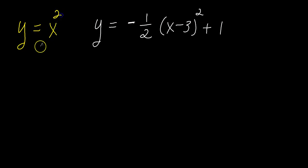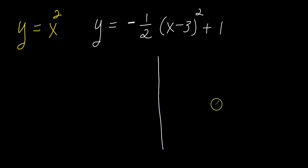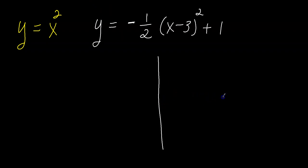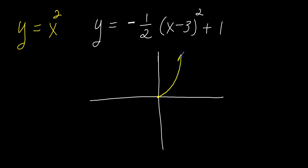I'm going to make a sketch of the parent function. Hopefully you remember that y equals x squared looks like the letter U from previous videos. So I'll make my x-y axis and sketch the parent function — it looks something like this. This isn't perfect, but it'll work.